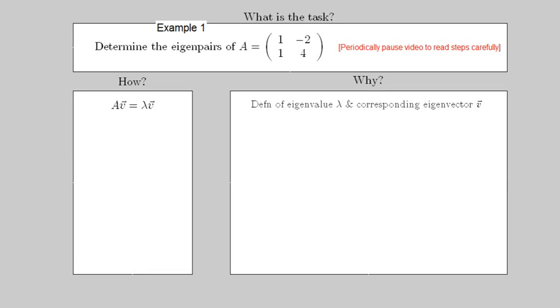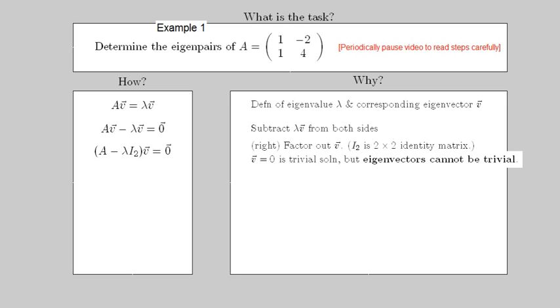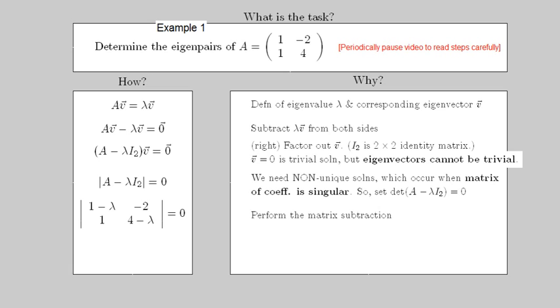Periodically pause this video when necessary. In short, we begin by determining the eigenvalues by setting the determinant of the matrix A minus lambda I to 0. This produces a polynomial equation for lambda called the characteristic equation.